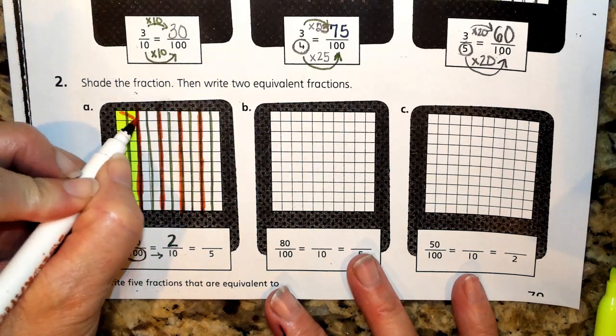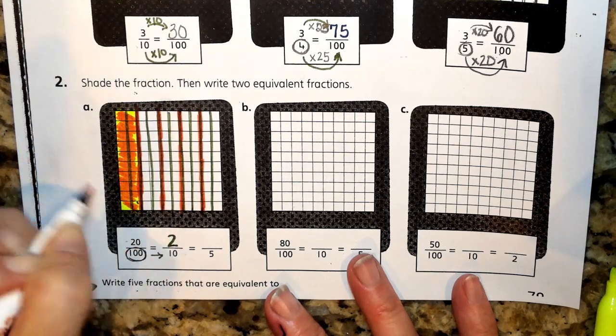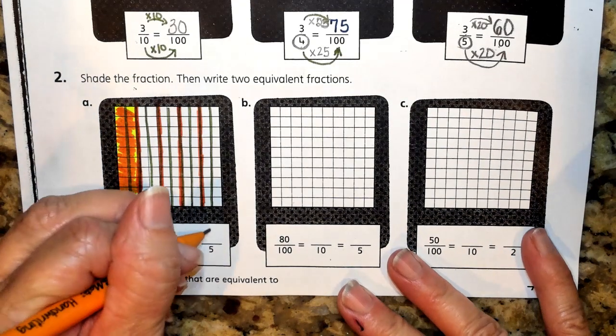So now we have 1 of the 5 pieces shaded. So our numerator name is 1 fifth.